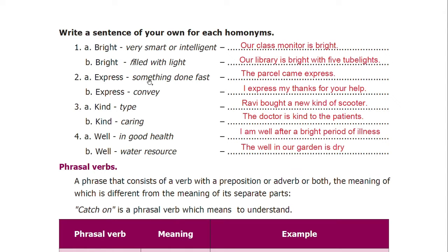Express means something done fast — 'The parcel came express.' Express also means to convey something — 'I express my thanks for your help.' Kind means type — 'Ravi bought a new kind of scooter.' Kind also means very caring — 'The doctor is kind to the patients.' Well means good health — 'I am well after a brief period of illness.' Well also means a water well — 'The well in our garden is dry.'